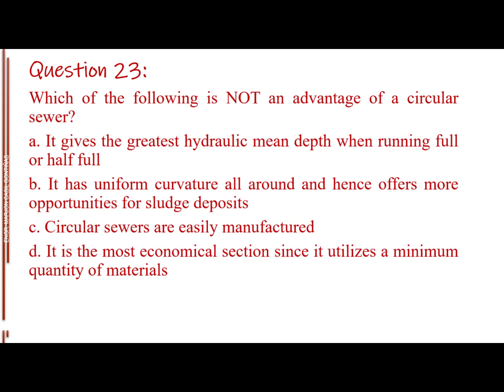Question number 23. Which of the following is not an advantage of a circular sewer? Letter A, it gives the greatest hydraulic mean depth when running full or half-full. Letter B, it has uniform curvature all around and hence offers more opportunities for sludge deposits. Letter C, circular sewers are easily manufactured. Letter D, it is the most economical section since it utilizes a minimum quantity of materials. The answer is Letter B, it has uniform curvature all around and hence offers more opportunities for sludge deposits.